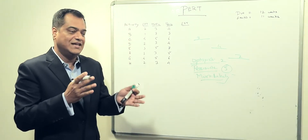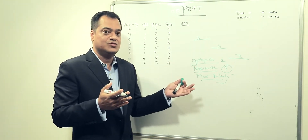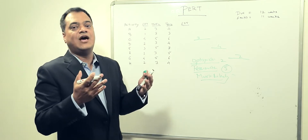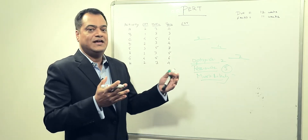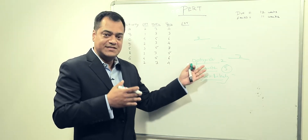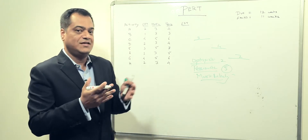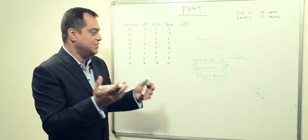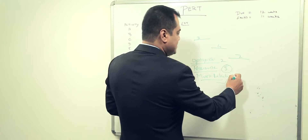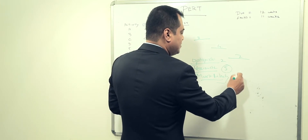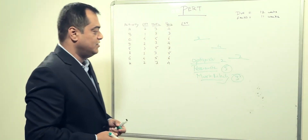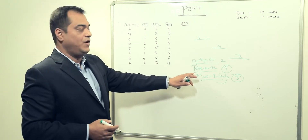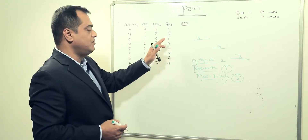Most likely is something in between optimistic and pessimistic — kind of an average between the two. It represents what is most likely going to happen. In this example, the most likely number is three.